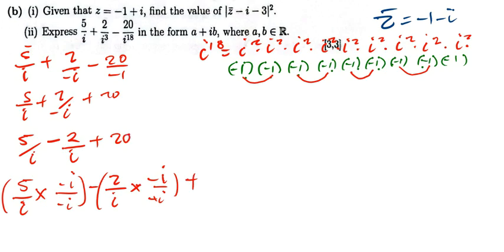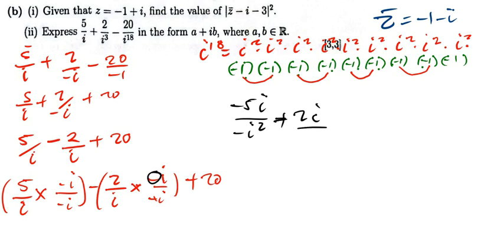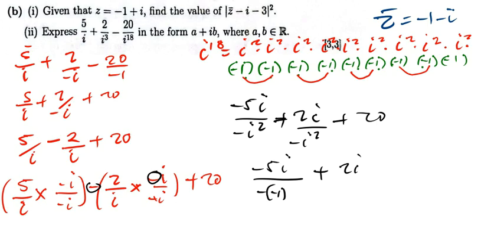We multiply: 5 divided by i times negative i over negative i, minus 2 over i times negative i over negative i, plus 20. Doing the math, I'll have negative 5i over negative i squared, plus 2i over i squared. Since i squared equals negative 1, the denominators become negative 1.